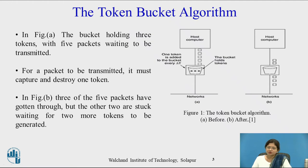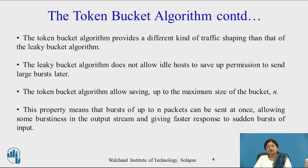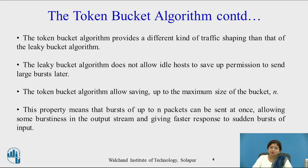The simple idea of the Token Bucket Algorithm is that the interface contains a Leaky Bucket which holds tokens. The Token Bucket Algorithm provides a different kind of traffic shaping than the Leaky Bucket Algorithm. The Leaky Bucket Algorithm does not allow an idle host to save up permission to send a large burst later, whereas the Token Bucket Algorithm allows saving up to the maximum size of the bucket. This means a burst of up to N packets can be sent at once, allowing some burstiness in the output stream and giving faster response to sudden bursts of input.